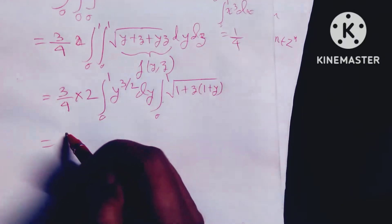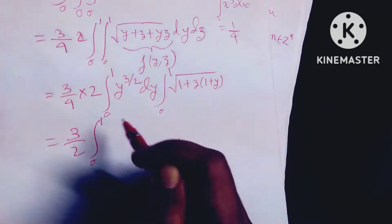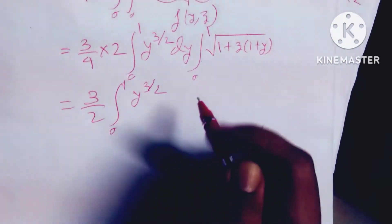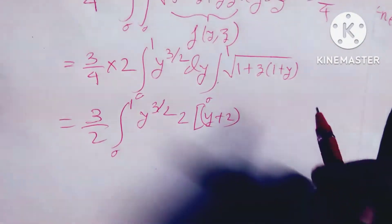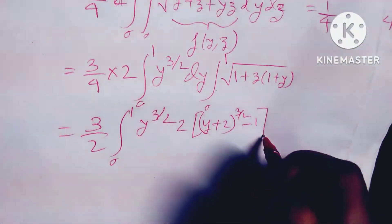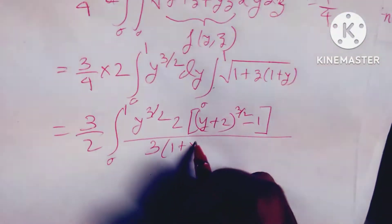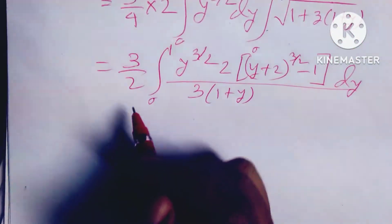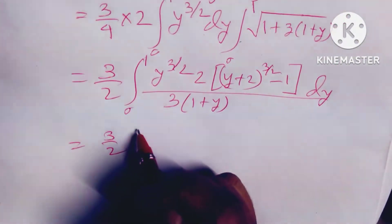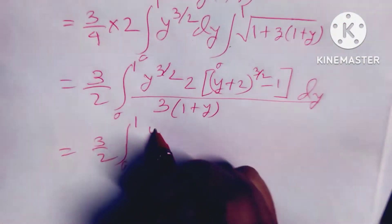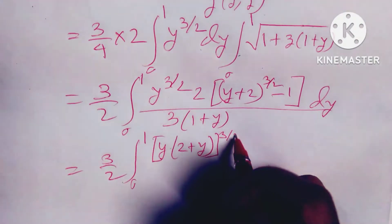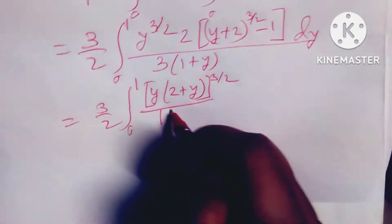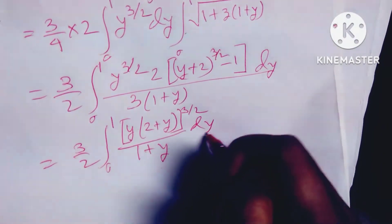We get: 3/2 times 0 to 1 of y^(3/2) into 2 into (y + 2), then simple integration: 3/2 minus 1 divided by 1 plus y. And minus 0 to 1 of y^(3/2) divided by (1 + y) dy.